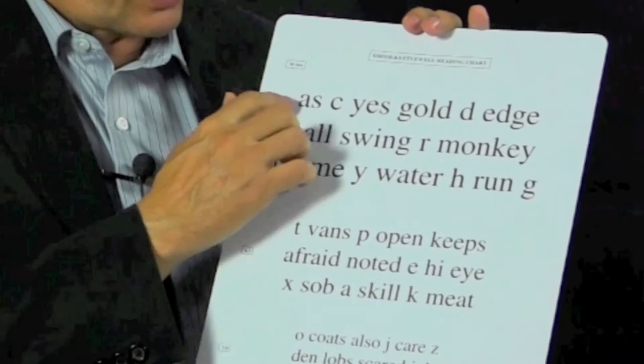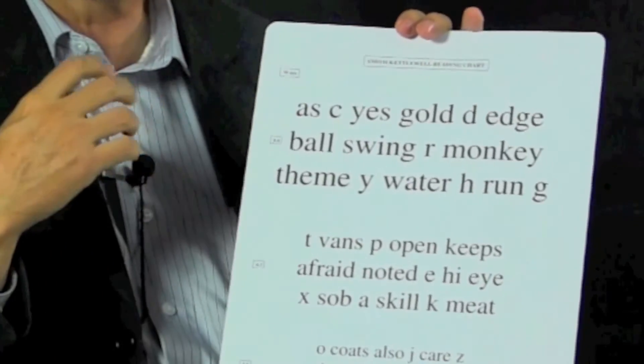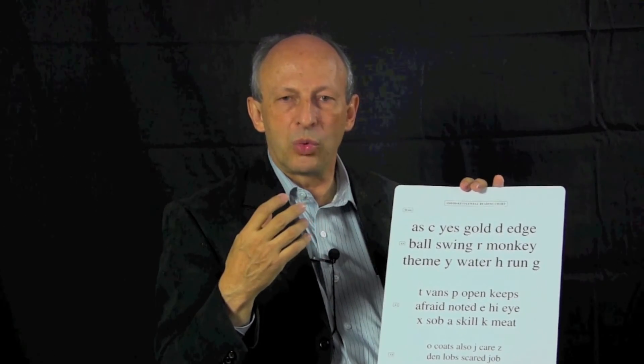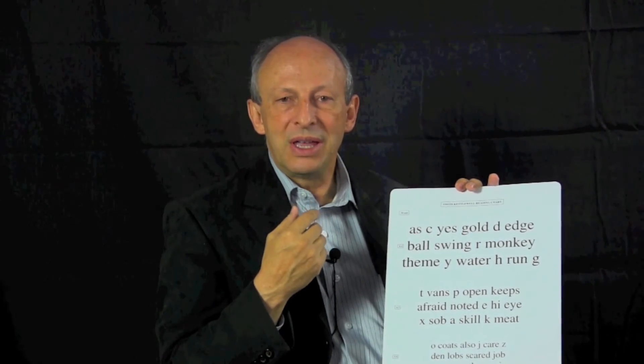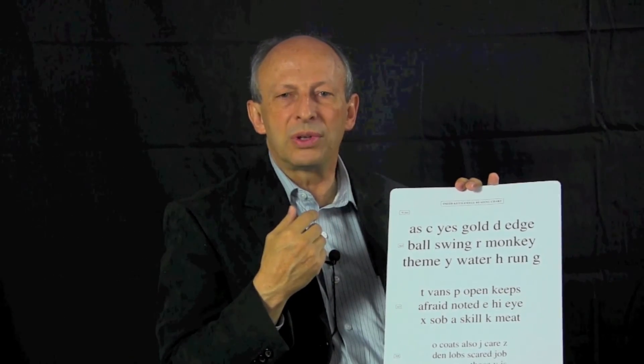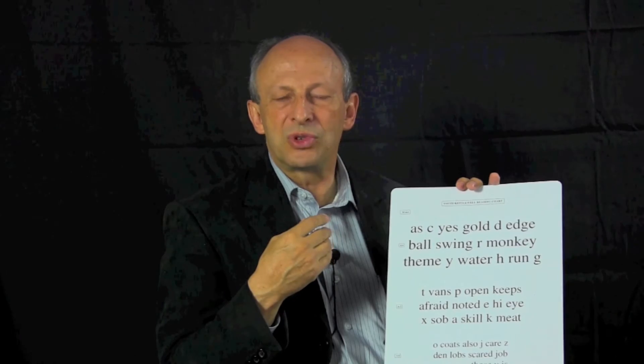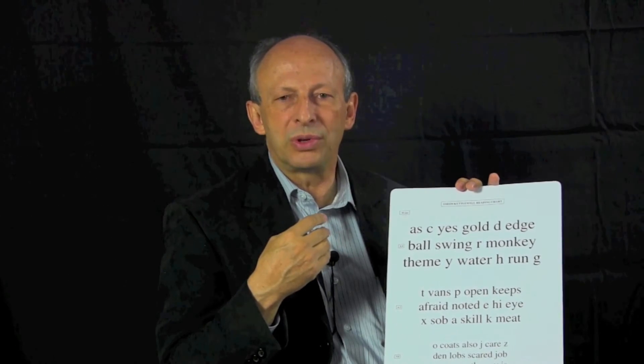On this block of text right here, it starts with: 'as, C, E, as, gold, D, edge' — a mixture of single letters and words. If you have a two-letter word and miss one letter, it will be read as a single letter. Words like 'gold' — if you have a left-sided scotoma, you might read it as 'old' instead of 'gold,' or confuse the first letter and make it 'told,' 'mold,' or 'sold.'